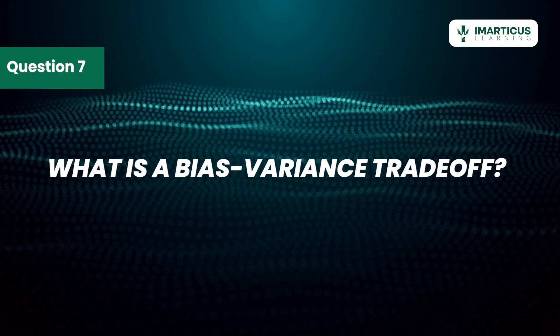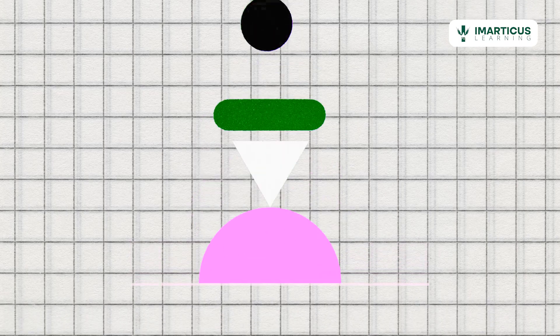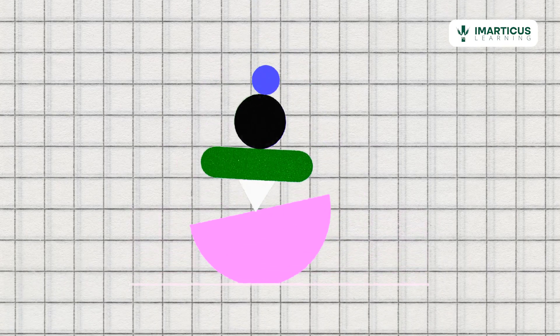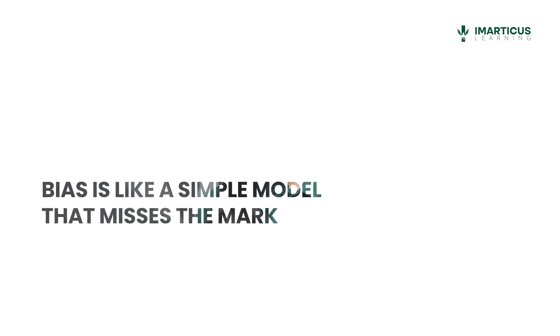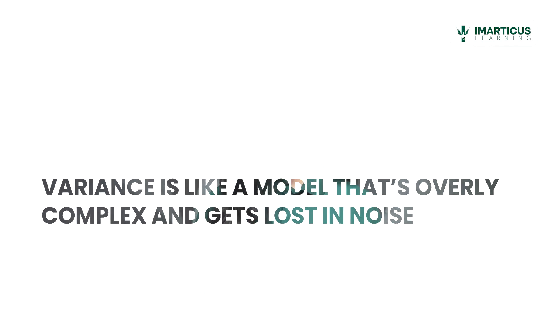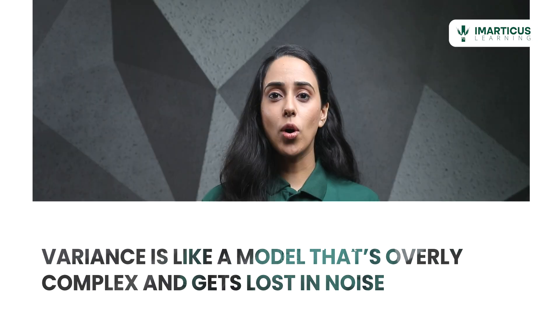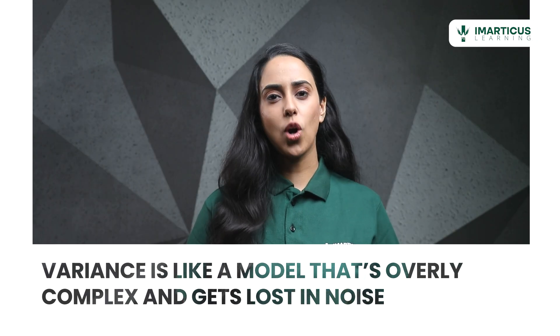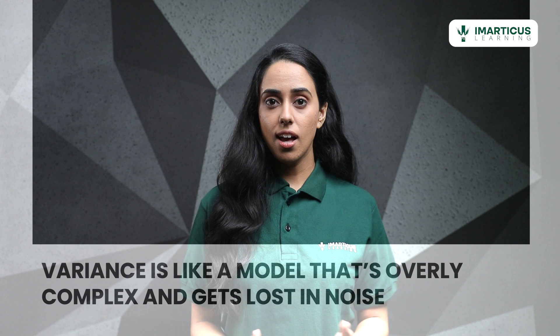What is the bias-variance trade-off? Understanding the bias-variance trade-off is crucial. It's like balancing two competing forces. Bias is a simple model that misses the mark, while variance is a model that is overly complex and gets lost in noise. Finding that sweet spot is key to creating a robust model.